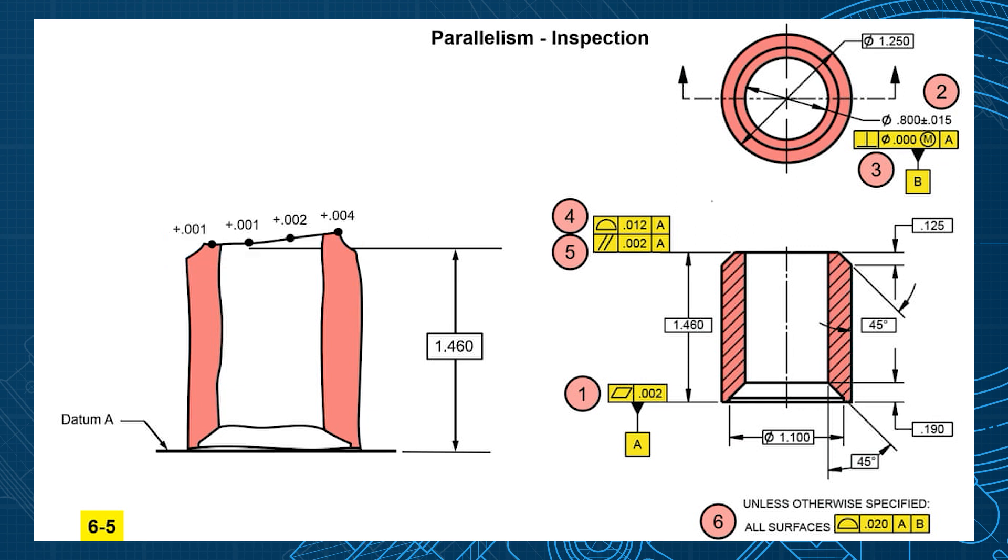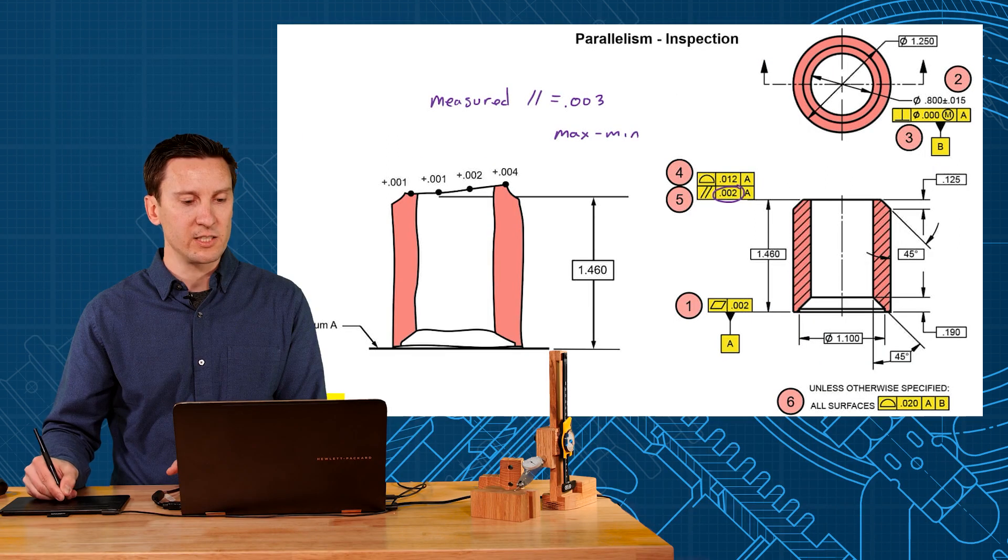I asked for a parallelism of 2. What did I get? What is my measured parallelism? Well, that would be 3. Now how'd you get 3? That would be max minus min. It's like the TIR.